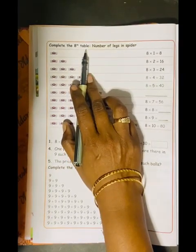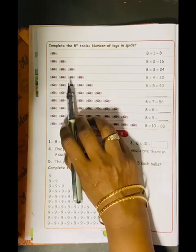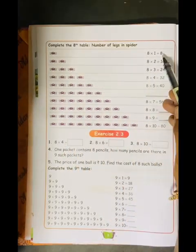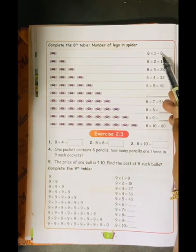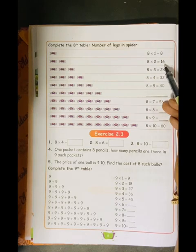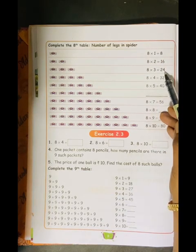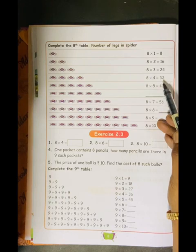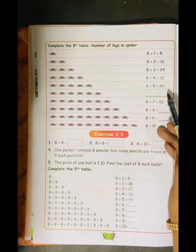Complete the 8th table. See, they have drawn the pictures and 8 tables are here. 8 times 1 is 8, 8 times 2 is 16, 8 times 3 is 24, 8 times 4 is 32, 8 times 5 is 40.